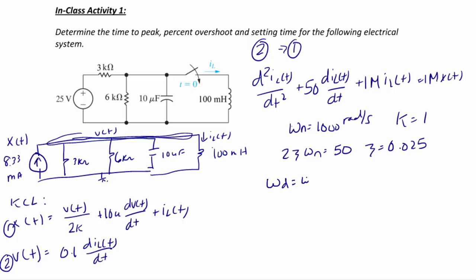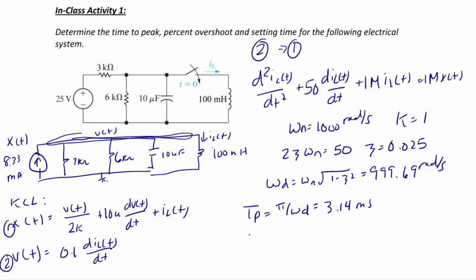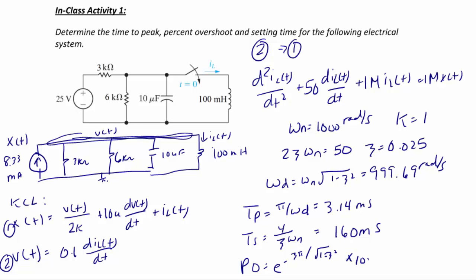With ζ = 0.025 and ωₙ = 1000 rad/s, ωd = ωₙ√(1 − ζ²) = 999.69 rad/s. The time to peak is tp = π/ωd = 3.14 ms. The settling time is 4/(ζωₙ) = 160 ms. The percent overshoot is e^(−ζπ/√(1 − ζ²)) × 100 = 92.44%.